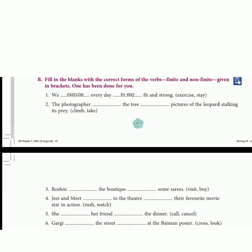Third sentence: Roshni [dash] the boutique [dash] some sarees. In the bracket we have the verbs visit and buy.